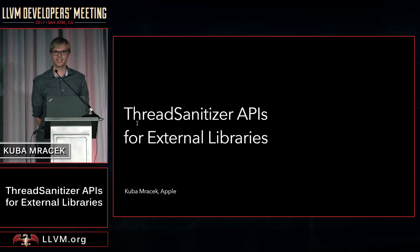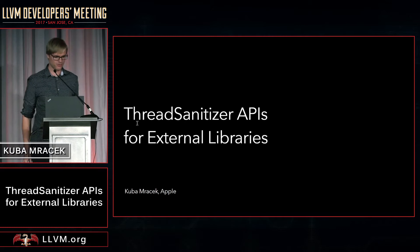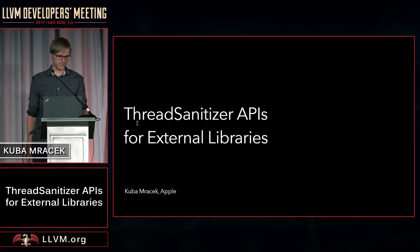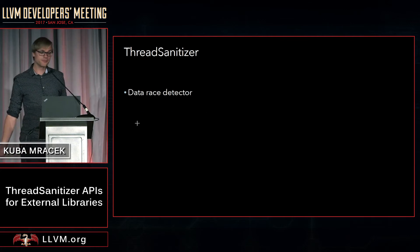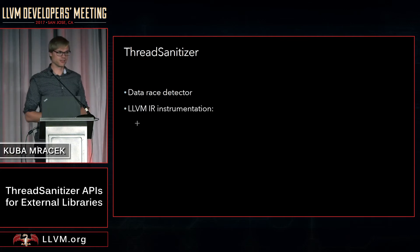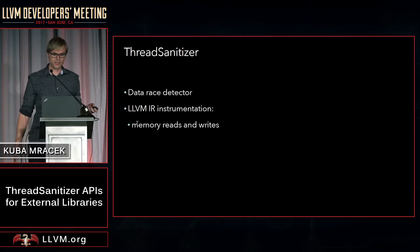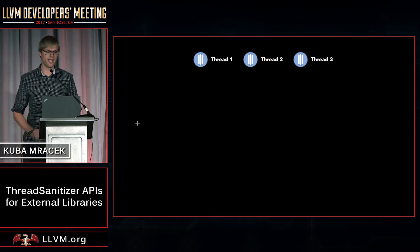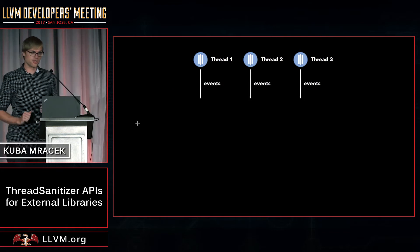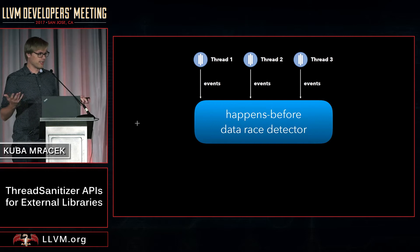My name is Kuba and I'm from Apple, and I will be talking about ThreadSanitizer APIs for external libraries. ThreadSanitizer is a data race detector that is based on LLVM IR instrumentation. What we do is instrument memory reads and writes, and also atomic operations like atomic loads and atomic stores. At runtime, if your program has multiple threads, the threads will generate events which all go into a happens-before data race detector.